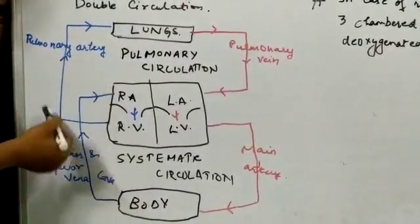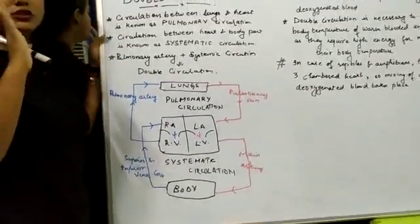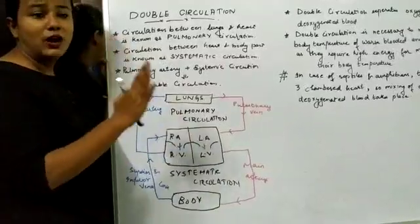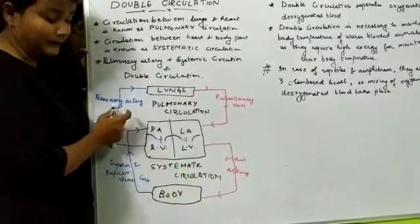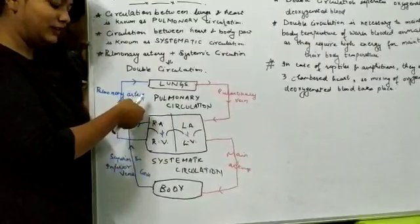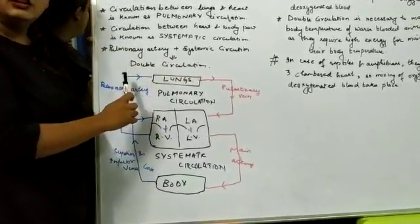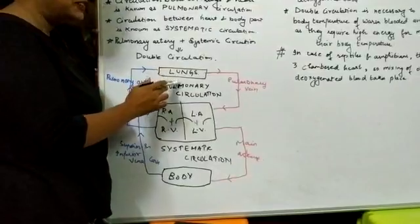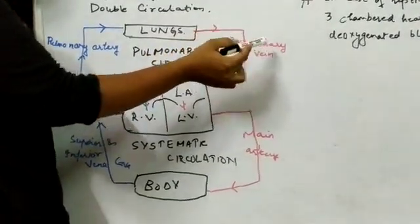The pulmonary artery takes this deoxygenated blood towards the lungs. The word 'pulmonary' is always associated with the lungs. So from right ventricle, the pulmonary artery carries deoxygenated blood to the lungs. The lungs convert this deoxygenated blood into oxygenated blood. Pulmonary vein then carries back this oxygenated blood — lungs ne deoxygenated blood ko oxygenated blood mein convert kiya, aur pulmonary vein is oxygenated blood ko vaapas le jaati hai.